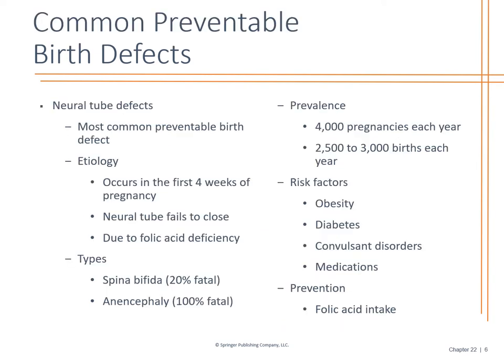Common preventable birth defects include neural tube defects, which is why we want patients taking folic acid if they're doing family planning. It usually happens in the first four weeks when the neural tube fails to close due to folic acid deficiency. Spina bifida has a 20% fatality rate; anencephaly is 100% fatal. Risk factors include diabetes, obesity, and medications. Prevention: take folic acid and prenatal pills prior to conceiving and throughout the pregnancy.